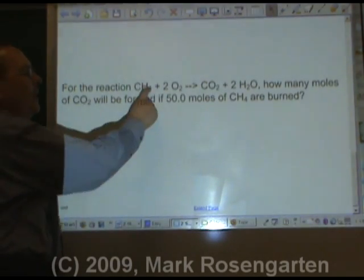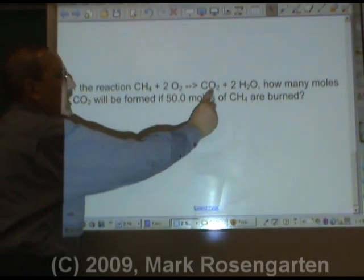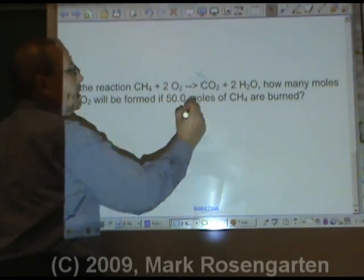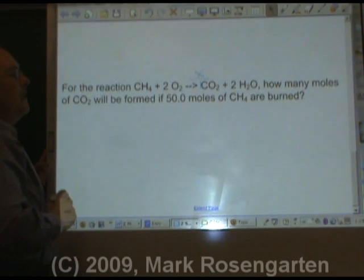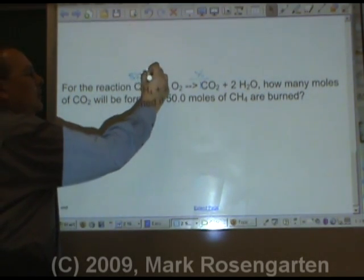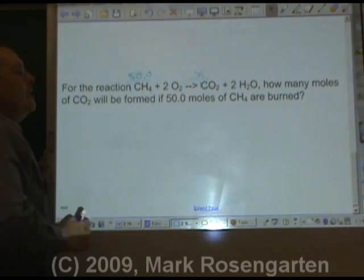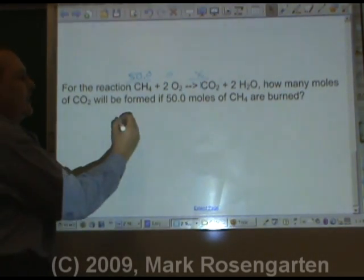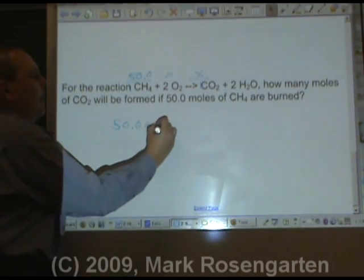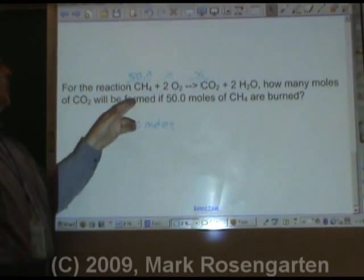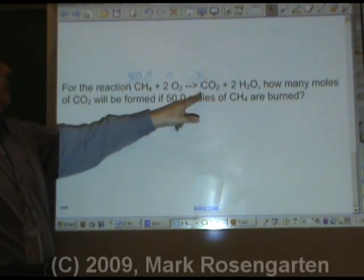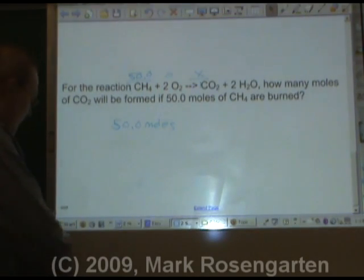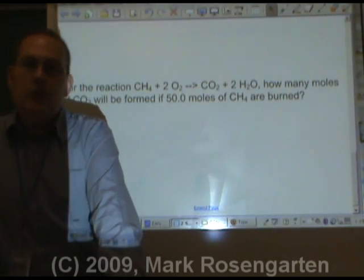For the reaction, methane plus two oxygens forms carbon dioxide plus two waters. How many moles of CO2 will be formed if 50 moles of CH4? Now, since it's a one to one ratio, you've just solved the problem. 50.0 equals X. 50.0 moles. We've got 50 moles of CH4. We're going to have 50 moles of CO2 because they exist in a one to one ratio in this reaction. And that's how to do basic stoichiometry.